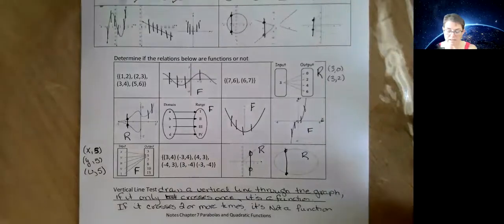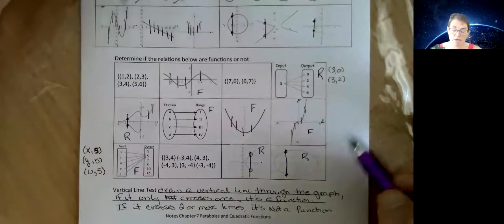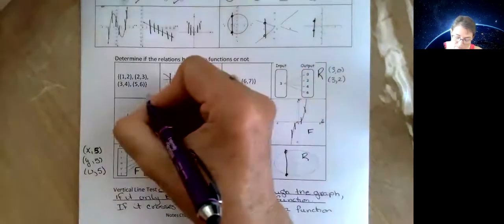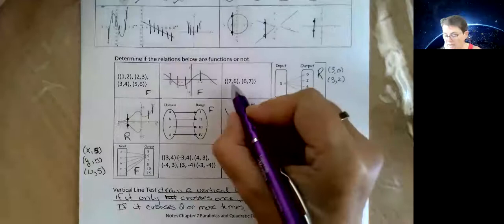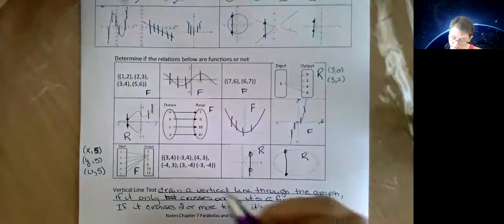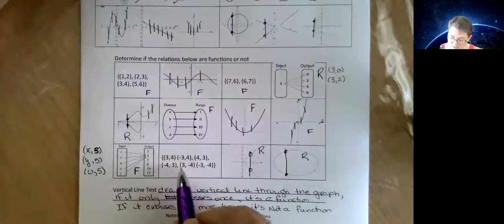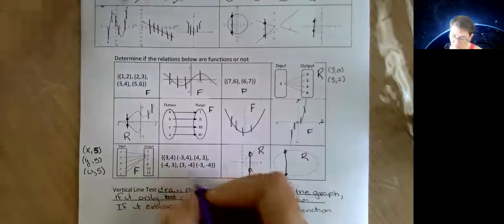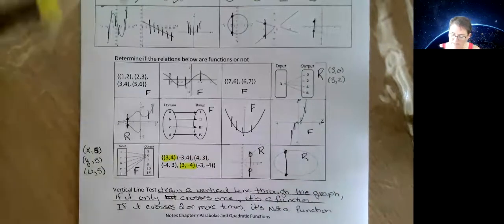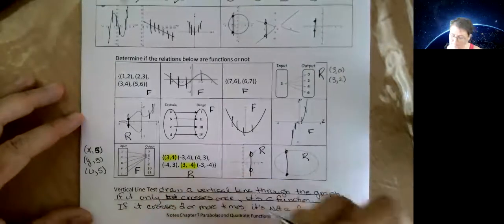Which leaves us with just the set ones. The easiest way is to see if you have more than one X in there, the same X twice. So, I've got a one, a two, a three, and a five. That's a function. And I've got a seven, and I've got a six. So, that's a function. We're good. Now, I've got a three and a four and a negative three and a four. Right there. There's a part that messes it up. I've got three matching with four and three matching with minus four. That makes that a relation.